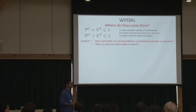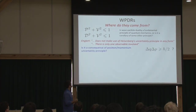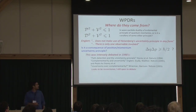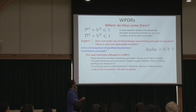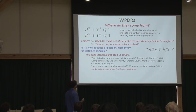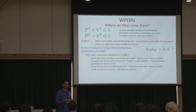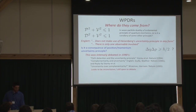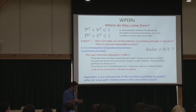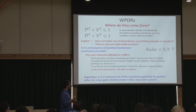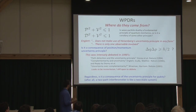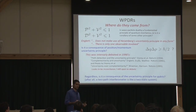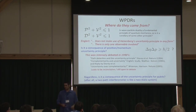This hasn't stopped people from debating the question. There was an intense debate in the 1990s involving a series of comments back and forth in Nature about whether these relations are somehow a consequence of the position-momentum uncertainty principle. This was a very heated debate and as far as I'm aware it didn't reach a clear conclusion. Rather than insert myself into that debate, I'm going to ask a slightly different question: whether these relations are a consequence of the uncertainty principle for qubits. After all, the two-path interferometer is like a two-state system, so it seems reasonable that these might be a consequence of qubit uncertainty.